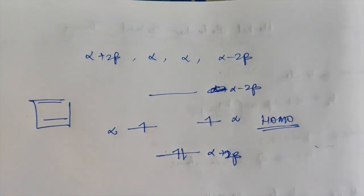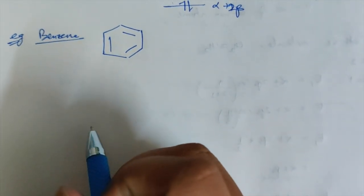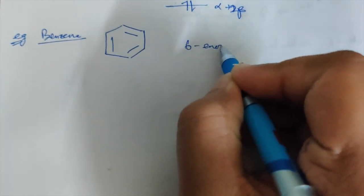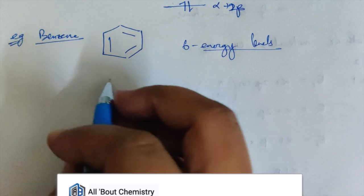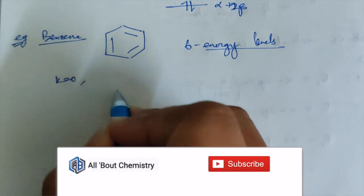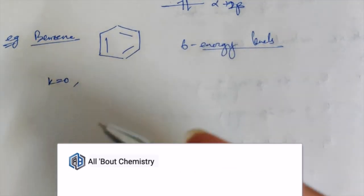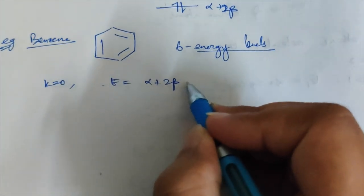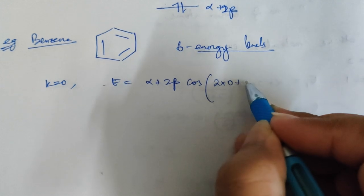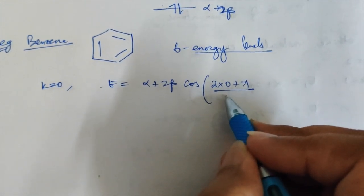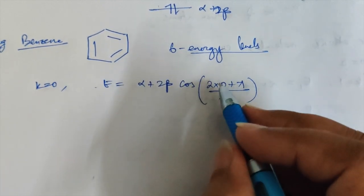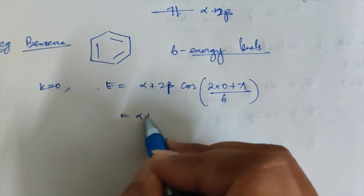Let's take one more example to brush up what we've seen. Benzene has six carbon atoms (N = 6), so it will have six energy levels. Starting with K = 0: E = α + 2β cos(2×0×π/6) = α + 2β cos(0) = α + 2β, since cos 0° = 1.